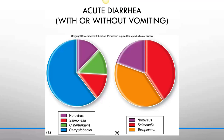Looking at what causes diarrhea, everybody always blames E. coli, but E. coli is not even one of the top ones. Campylobacter is responsible for a majority of cases, followed by Salmonella, Clostridium perfringens, and norovirus. Without vomiting, the breakdown includes Toxoplasma, Salmonella, and norovirus.